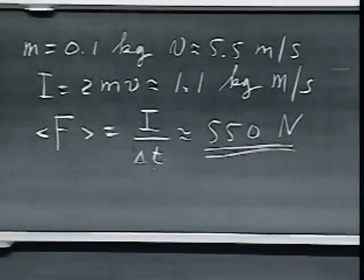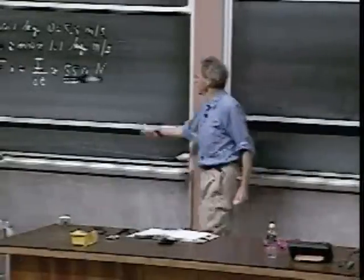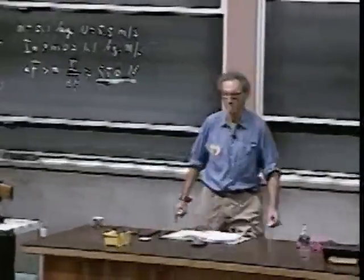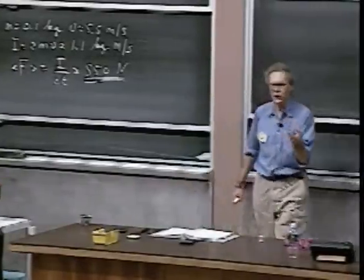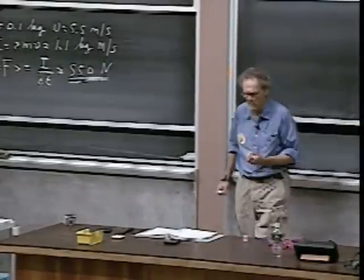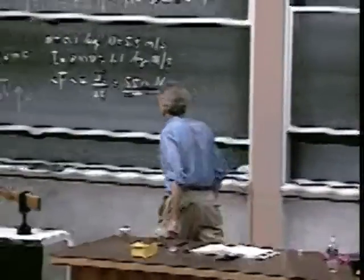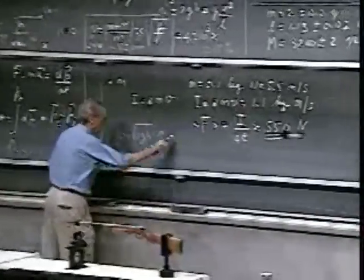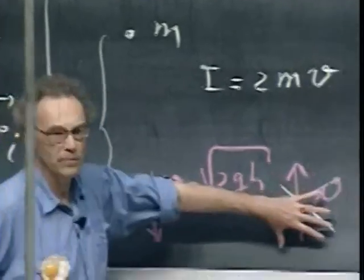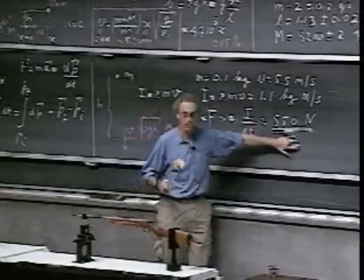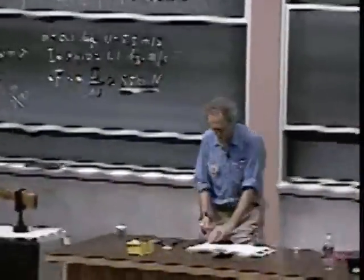People play tennis with speeds hundreds of miles per hour — ten times higher than here — so the weight increase is even more. If the collision were completely inelastic, the average force would still be approximately the same, because the impulse would be half but the impact time would also be half. So the average force is the same — very high — but for a shorter amount of time.